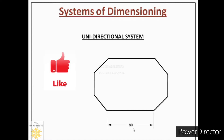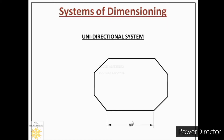In the aligned system, horizontal dimensions are readable from the bottom of the page and vertical dimensions are readable from the right side of the page. But here, the name is unidirectional — 'uni' means same direction. So whether the dimension is horizontal, vertical, or inclined, you must place the dimension so that it is readable from the bottom of the page, placed on the dimension line after breaking it from the middle.